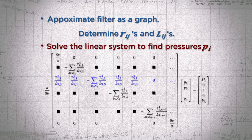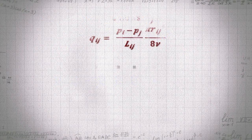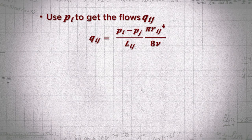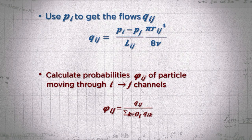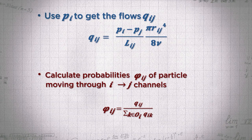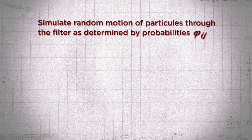Then we can take that information, solve a linear system, and now we have the pressures at each node in the graph. Now with that, we know the flow rates through the filter in each channel. And we can use those to determine a probability distribution for a small particle moving through a given channel.